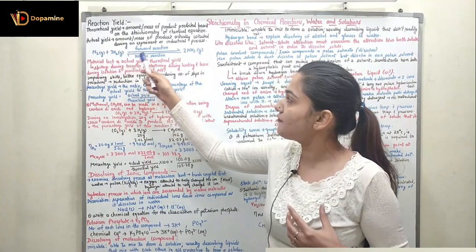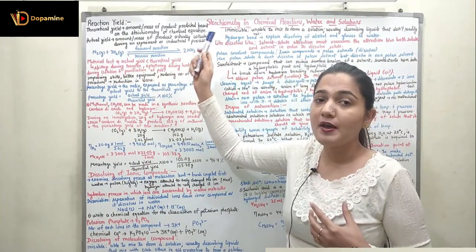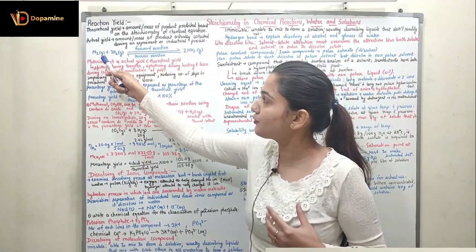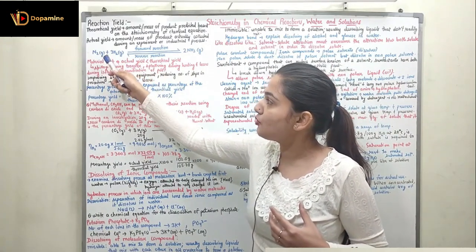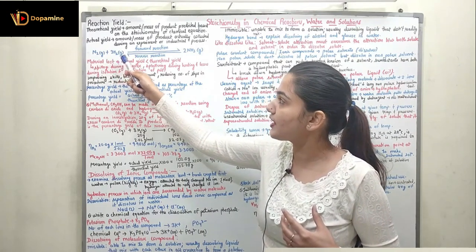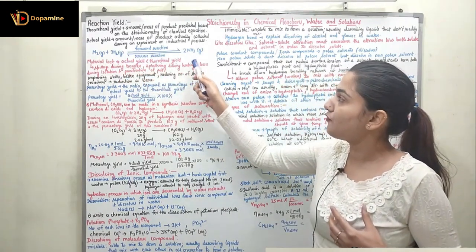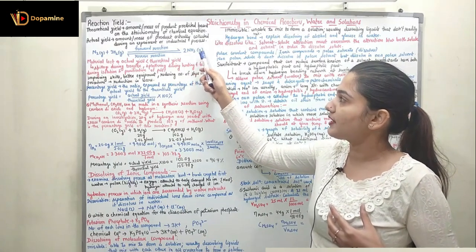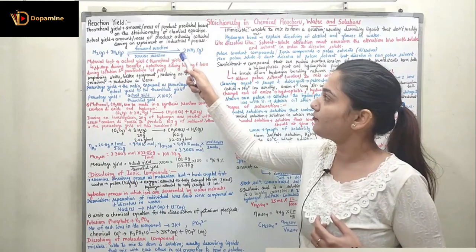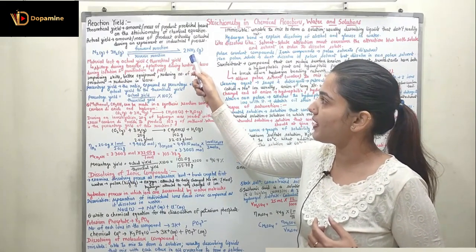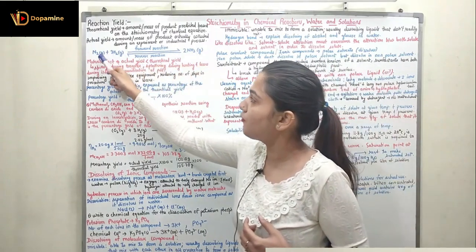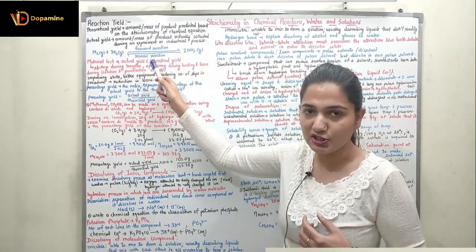Theoretical yield is the maximum possible amount of product formed for given reactants. Here we have various types of reactions and we must understand forward and reverse reactions. Nitrogen gas N2 plus 3H2 in gaseous form reacts to form 2NH3 ammonia — that is the forward reaction, whereas NH3 dissociating to form N2 plus H2 is the reverse reaction.